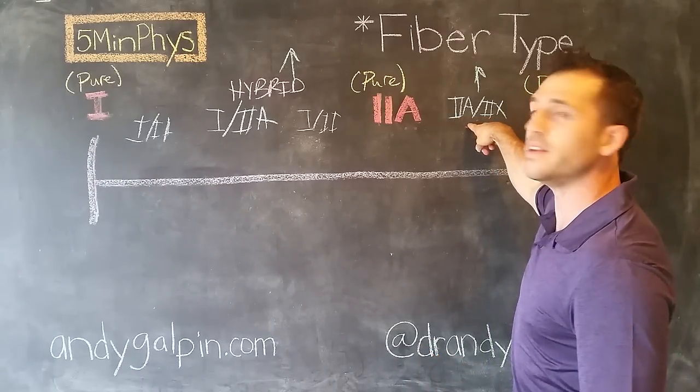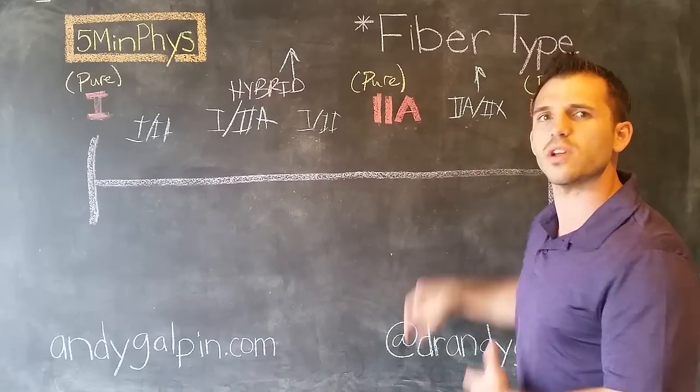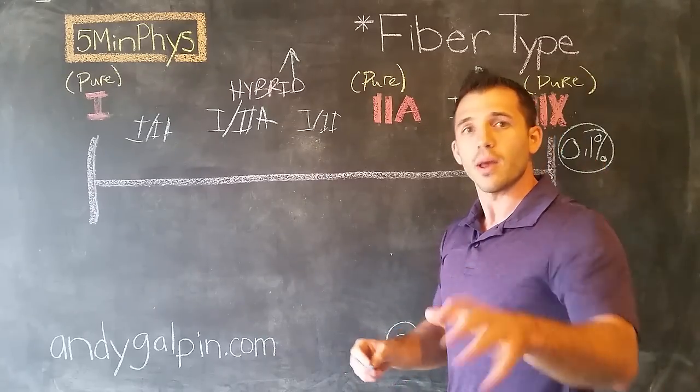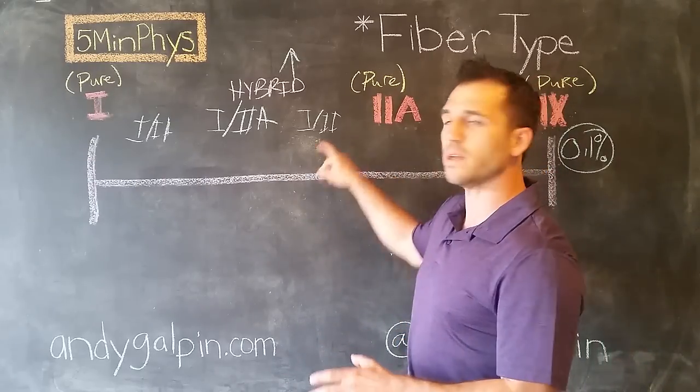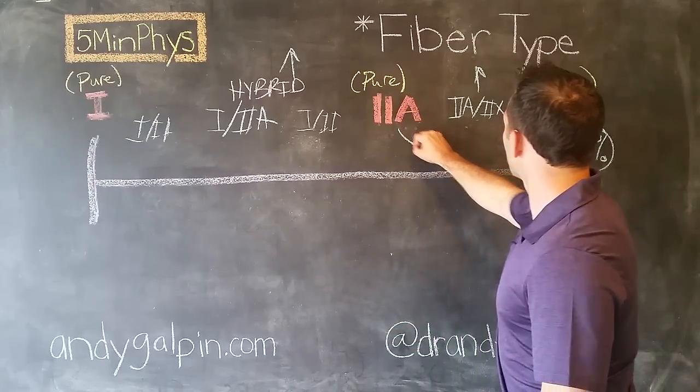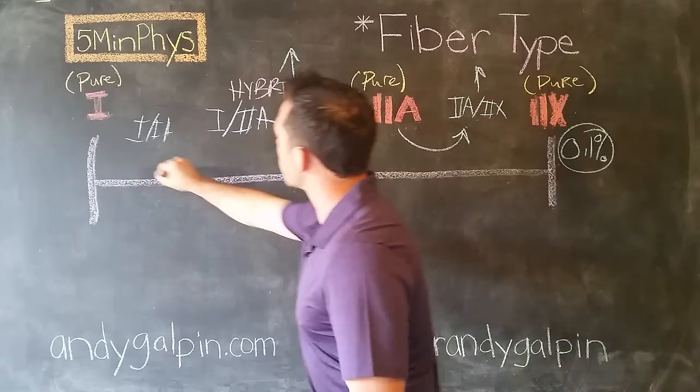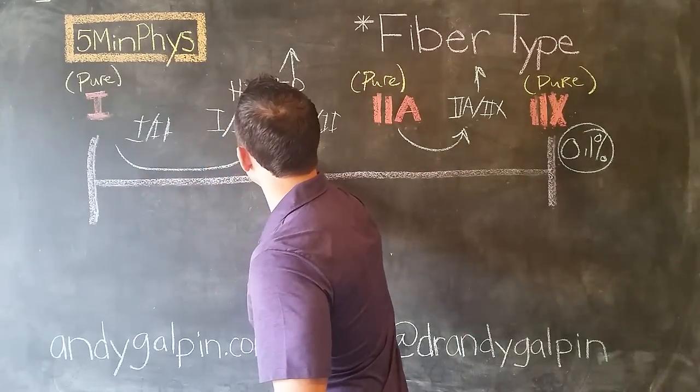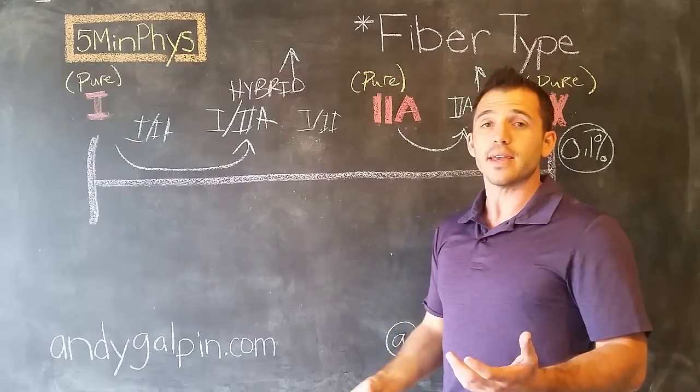But we see a ton of 2A/2Xs, especially if you're untrained or even moderately active. Okay, so basically what's happening is we don't know exactly, but we can theorize that as you become less physically trained, your 2As start converting into 2A/2X. Your 1s start being converted into 1/2A. And we don't know exactly why these fibers turn into hybrids.